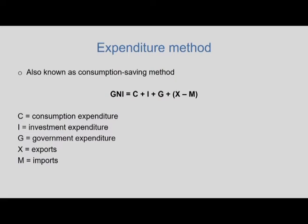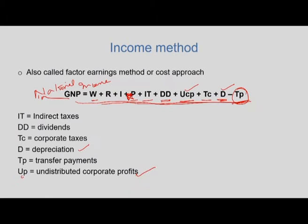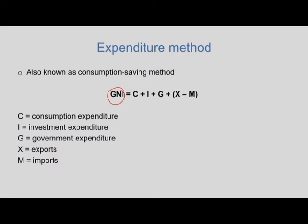The third method is the expenditure method. According to this method, national product is the sum value of sales to final demand, also known as the consumption saving method. Personal consumption expenditure, net foreign investment expenditure and government expenditure on goods and services are added to obtain national income at market prices. The GNI here is C plus I plus G plus X minus M, which is the net of exports. National income estimated through all three methods should give the same single estimate.